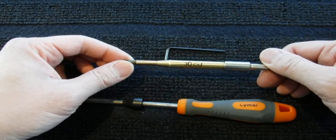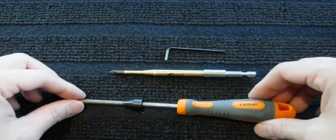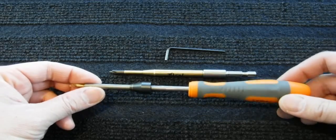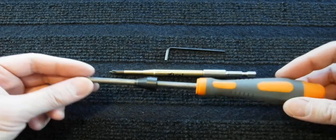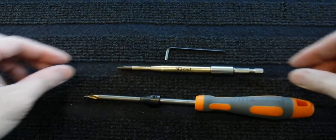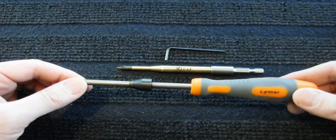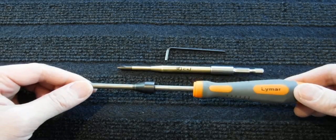This one is set up for 30 caliber. This is what I have been using prior to my purchase of this new deburring tool - the Lyman flash hole deburring tool.